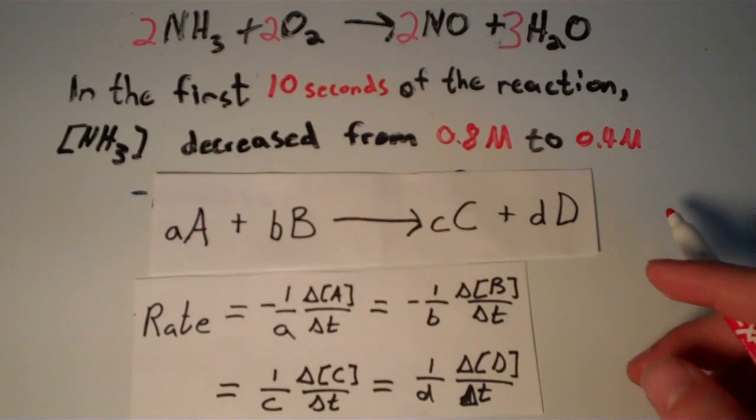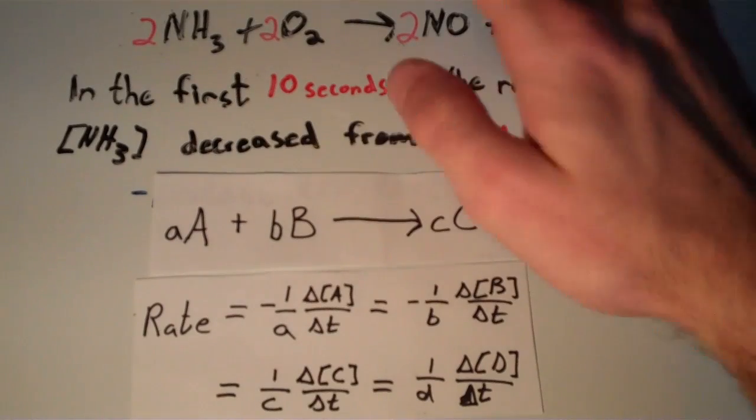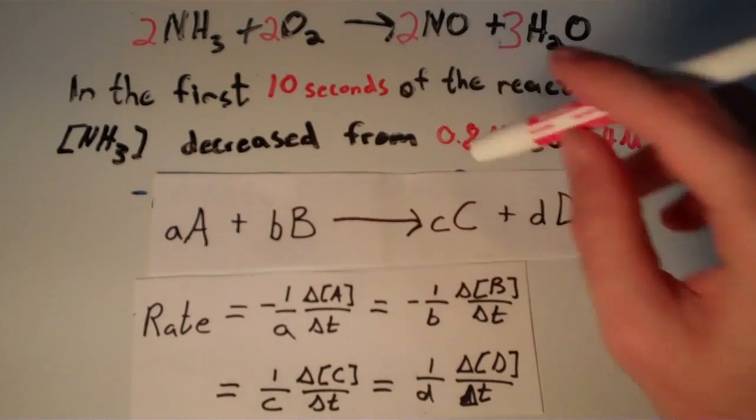So we're going to find the rate using the change in the concentration of NH3, and also the time interval given.